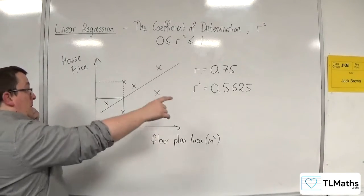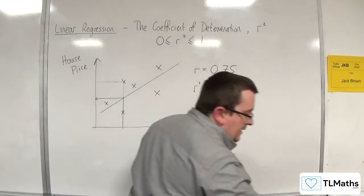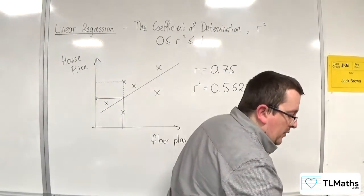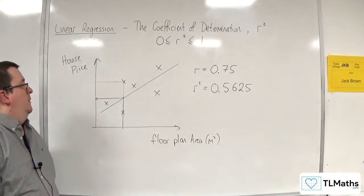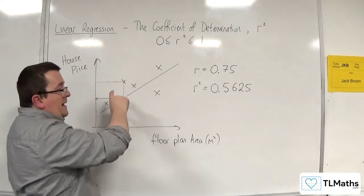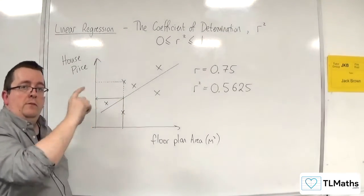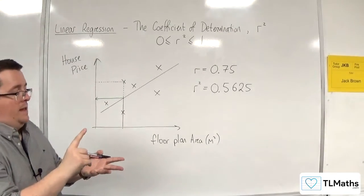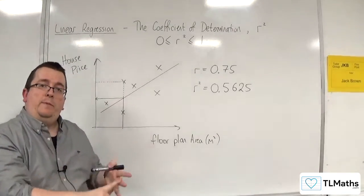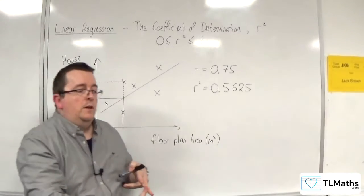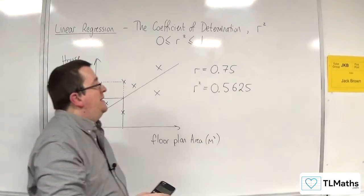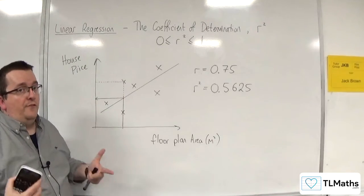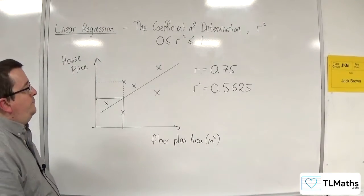Whereas the remaining percentage, 43.75%, that remaining percentage is location, is number of bedrooms, is it semi-detached or is it detached. That percentage that is left over is explaining all of the other variables.